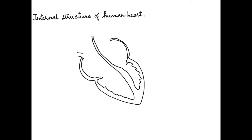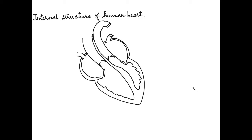Now we draw the blood vessels — those that bring blood to the heart and those that carry blood out of the heart. We draw the ones which bring blood, then extend this line down to form the valve. The blood vessels carrying blood out of the heart also have valves, which we draw here. We then extend the blood vessel on the left side to form a curve down, and on the right side we make branches. The entire structure with blood vessels is now drawn.